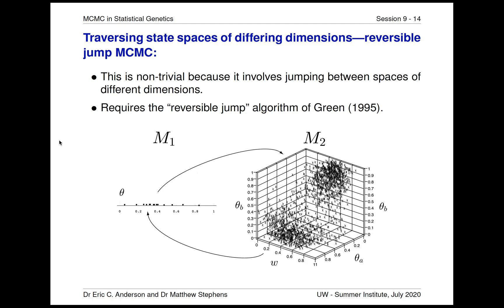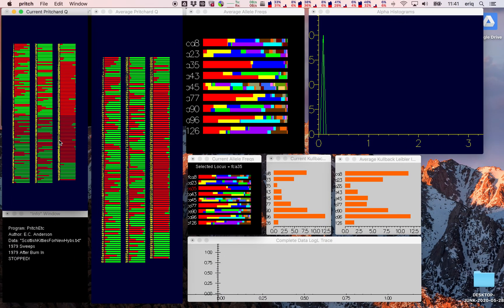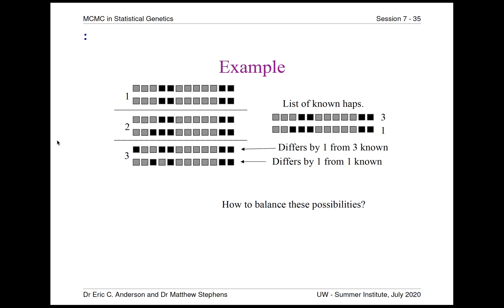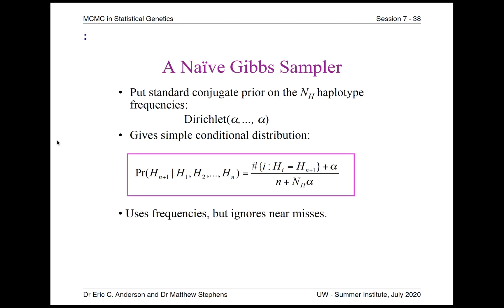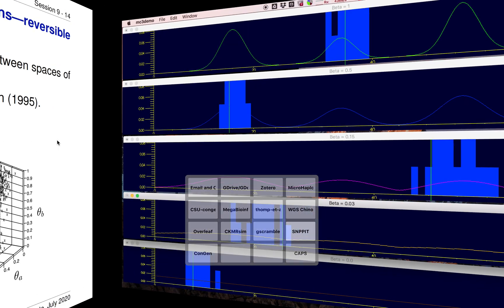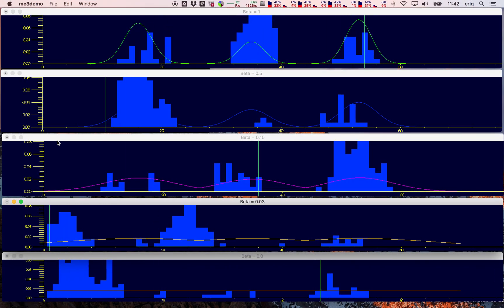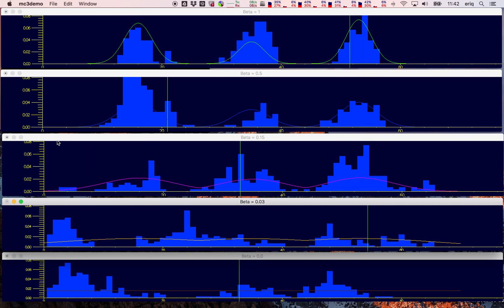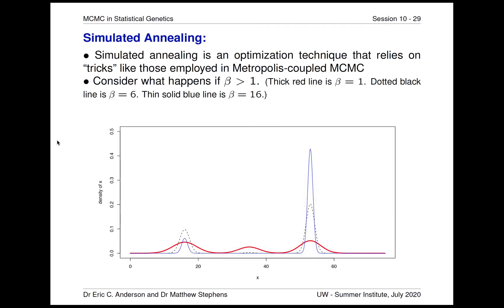After that, Matthew proceeds with a discussion of the inference of haplotypes from genotype data and talks about the role of MCMC in those applications, which is a critical application in statistical genetics. On the last day, we'll consider some special topics such as reversible jump MCMC and Markov-Metropolis-coupled MCMC, or what's sometimes called simulated tempering. We'll also discuss the correspondence between that and optimization techniques like simulated annealing.